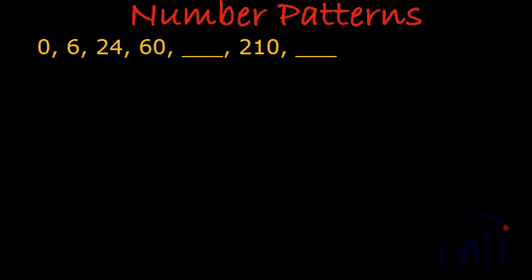We have one more number pattern to solve. The pattern is 0, 6, 24, 60, blank, 210, blank. We have to use 210 as our checkpoint. What is the first step we follow?